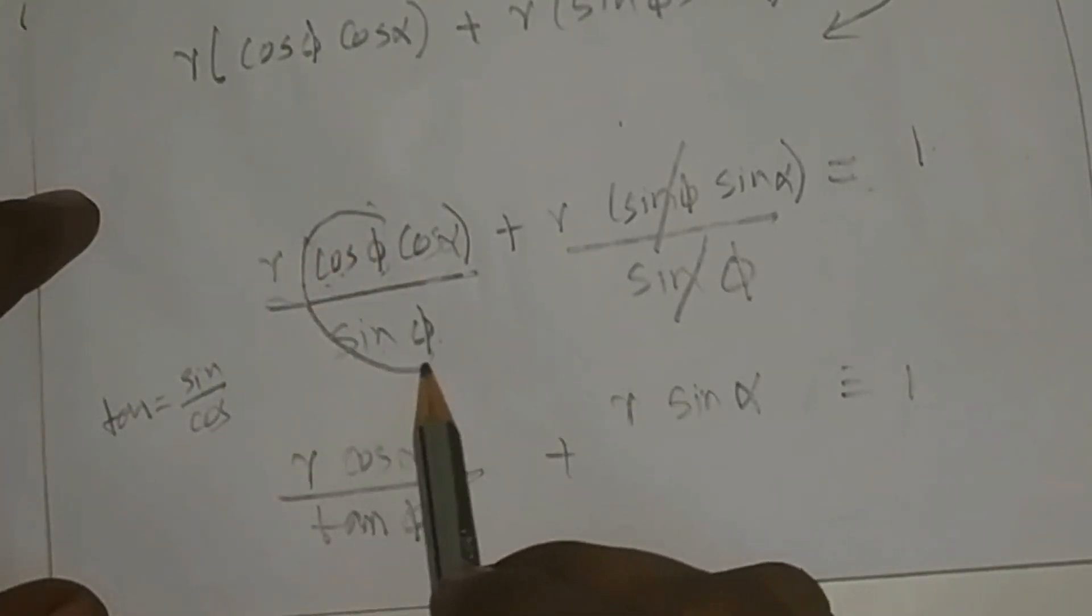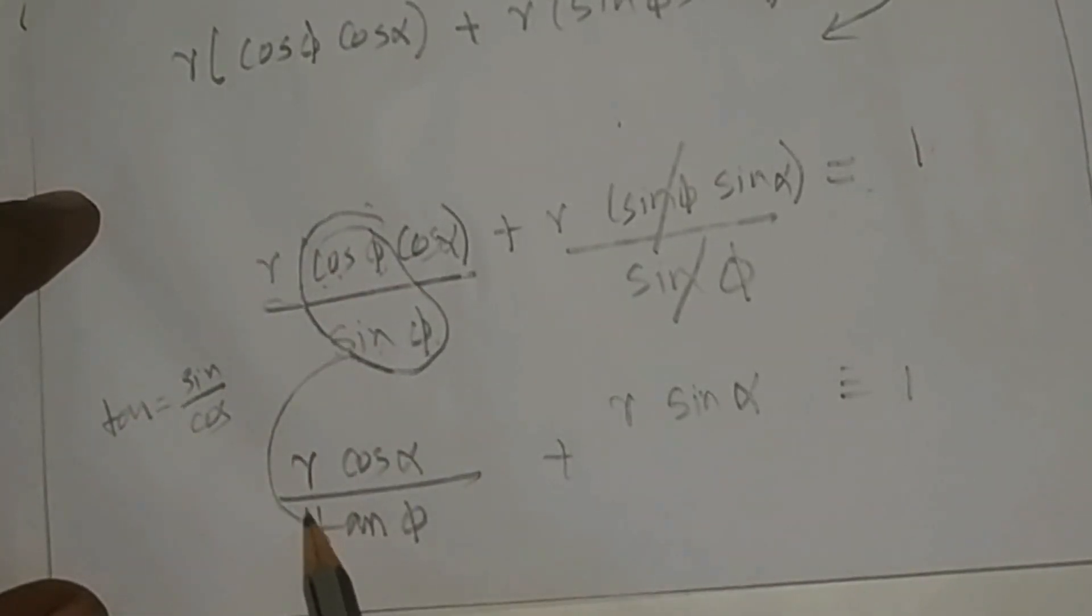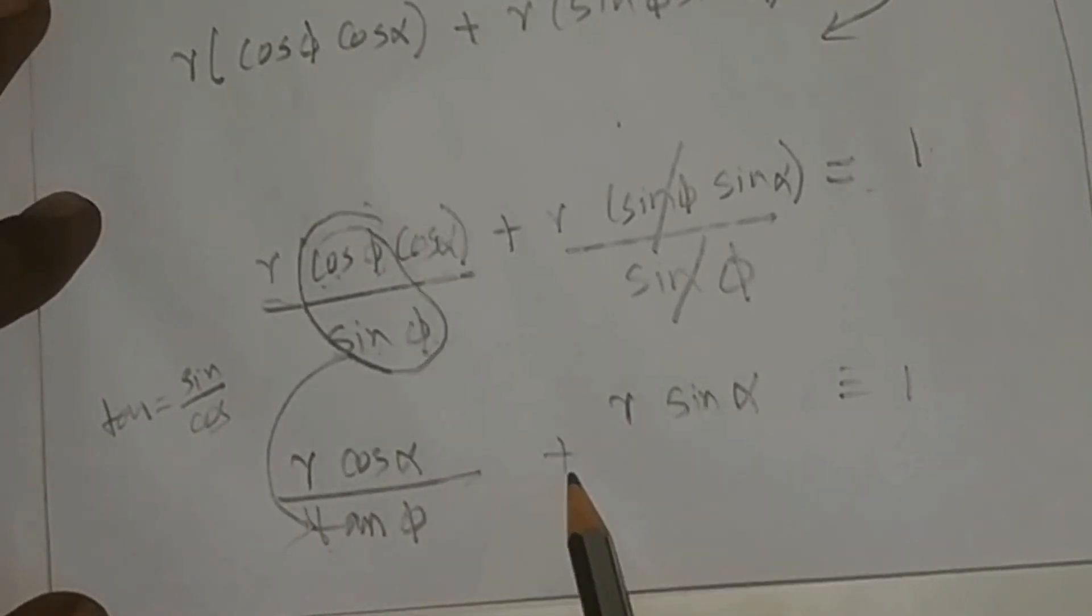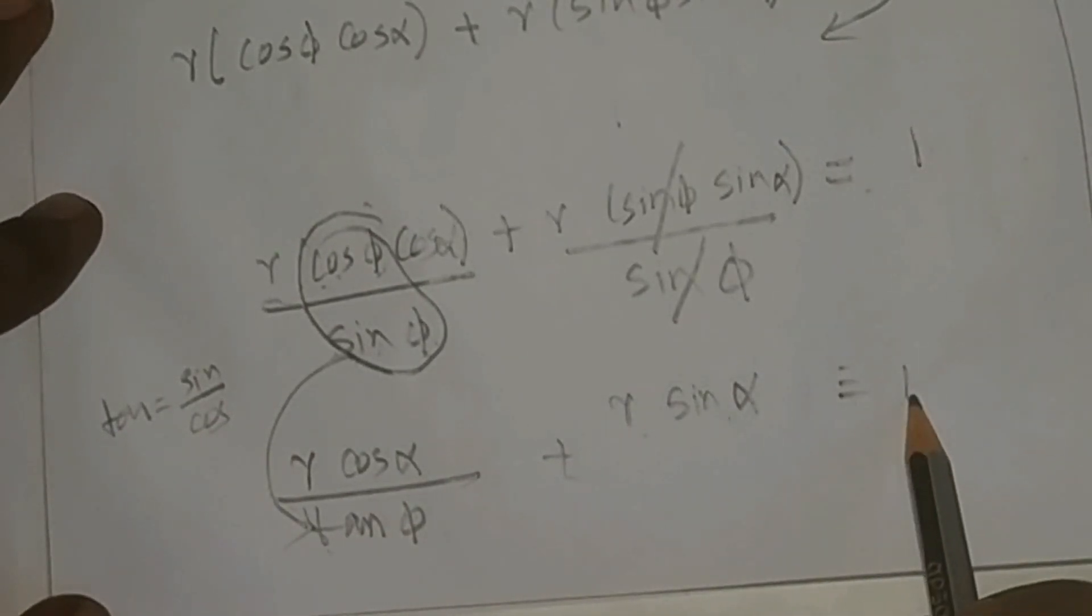This becomes: r cos α / tan φ + r sin α = 1.